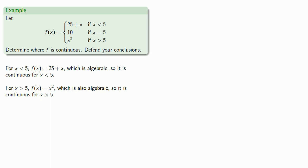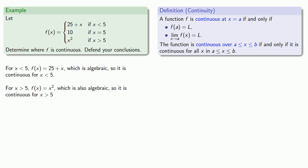At x equals 5, we change rules, and so we need to check for continuity. Returning to our definition of continuity, remember that a function is continuous at x equals a if and only if the function value is equal to something and the limit as x approaches a of the function is equal to the same thing. The easy thing to check first is the function value. We find that f of 5 is equal to 10, so f of 5 exists.